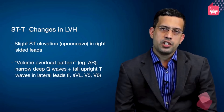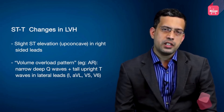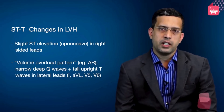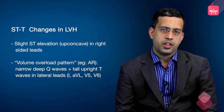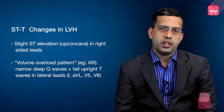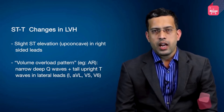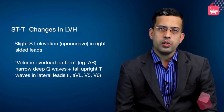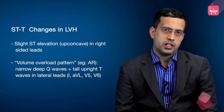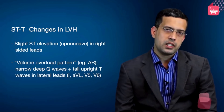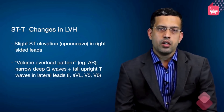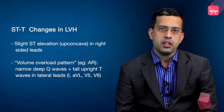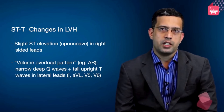In the volume overload pattern, instead of inverted T-waves, you find tall upright T-waves in the lateral leads such as I, AVL, V5, and V6. Concomitantly, narrow deep Q-waves are present in those leads. This is called the volume overload pattern when it accompanies the voltage criteria for LVH.